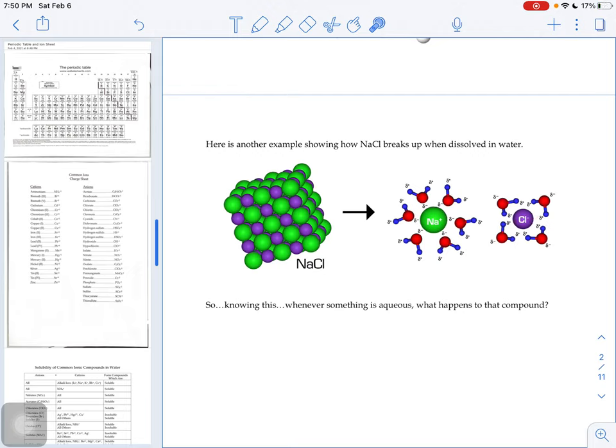What basically happens is the cations and the anions are surrounded by water molecules. They kind of have this little protective bubble of water around them. The official name for those is hydration spheres.